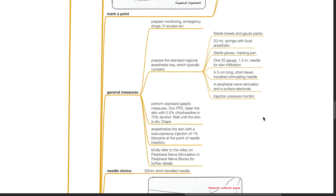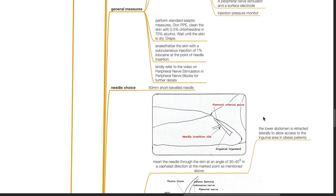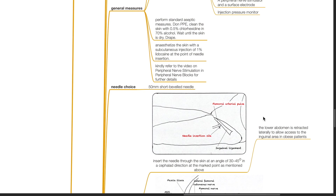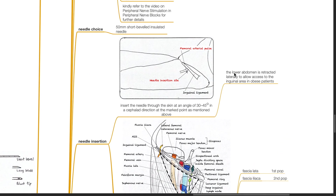Perform standard aseptic measures and anesthetize the skin. The needle of choice is a 5 cm short bevel insulated needle. Needle insertion: insert the needle through the skin at an angle of 30-45 degrees in a cephalad direction at the marked point.